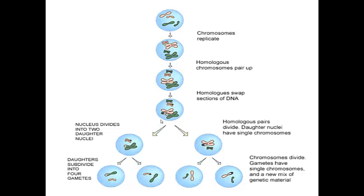Then we have the first division of meiosis, where the homologous chromosomes separate, followed by the second division of meiosis, where each chromatid is pulled apart, to give four new cells, each with only one copy of each chromosome — half the chromosome number of the original parent cell. And because of that recombination and independent assortment, each one of those gametes is different.